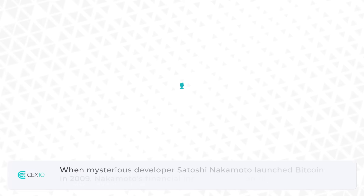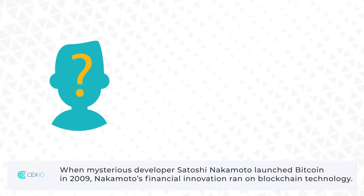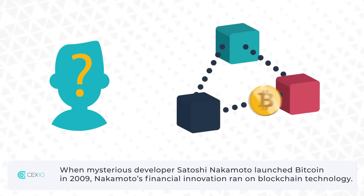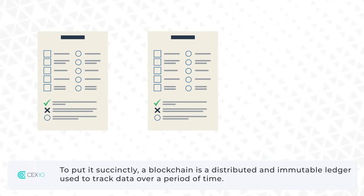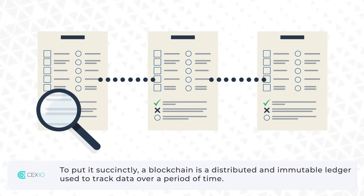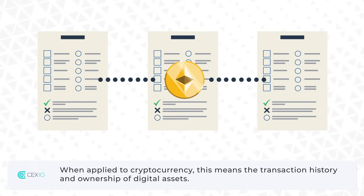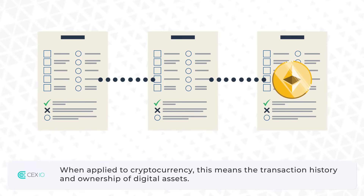When mysterious developer Satoshi Nakamoto launched Bitcoin in 2009, Nakamoto's financial innovation ran on blockchain technology. To put it succinctly, a blockchain is a distributed and immutable ledger used to track data over a period of time. When applied to cryptocurrency, this means the transaction history and ownership of digital assets.